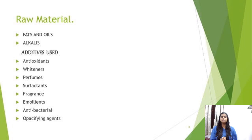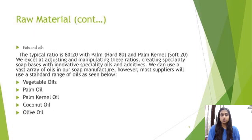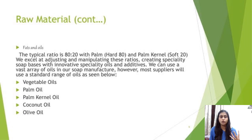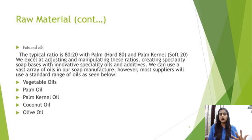Raw materials used are fats and oils, alkalis, and additives. Additives include antioxidants, whiteners, perfumes, surfactants, fragrances, emollients, and antibacterial or opacifying agents. The typical ratio of oils is 80 to 20 with palm and kernel oil — hard palm at 80% and soft palm kernel at 20%. Most suppliers use a standard range of oils including vegetable oils, palm oil, palm kernel oil, coconut oil, and olive oil.